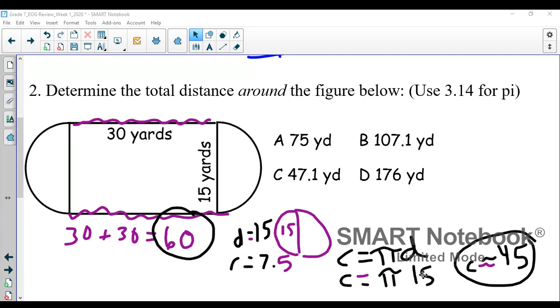15 times 3 is about 45, so it takes me 60 yards to go across my straightaways and 45 yards to go across the outside, the circular portion. All together with my estimate it's 105, and if I were to use 3.14, if I had a calculator for exactly pi, it would be 107.1 yards around that figure.